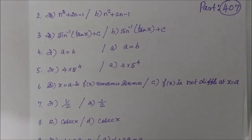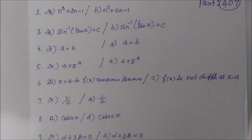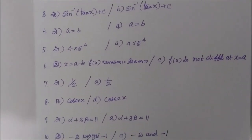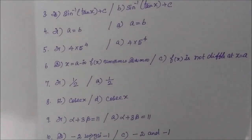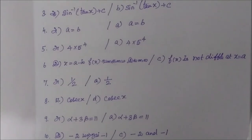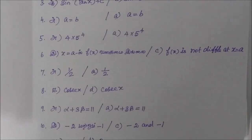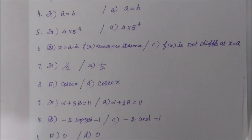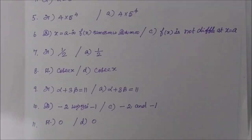Then for question number 7: option A. Then for question number 8: option E. Then for question number 9: option A, alpha plus 3 beta equal to 11.